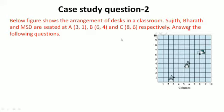So there are three students in the classroom: Sujith, Bharat and MSD, sitting in different places. Sujith is sitting at A, which is (3,1) — you can see this in the figure. This question is made from the concept of coordinate geometry. Bharat is sitting at B, which is (6,4), and MSD is sitting at C, with coordinates (8,6).